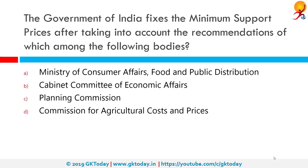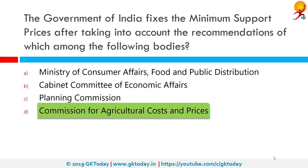The Government of India fixes minimum support prices after taking into account the recommendations of which body? The correct answer is the Commission for Agricultural Costs and Prices (CACP). Assurance of a remunerative and stable environment is very important for increasing agricultural production and productivity, since the marketplace for agricultural produce tends to be inherently unstable. Minimum support prices for major agricultural products are fixed by the government each year after taking into account the recommendations of the CACP.